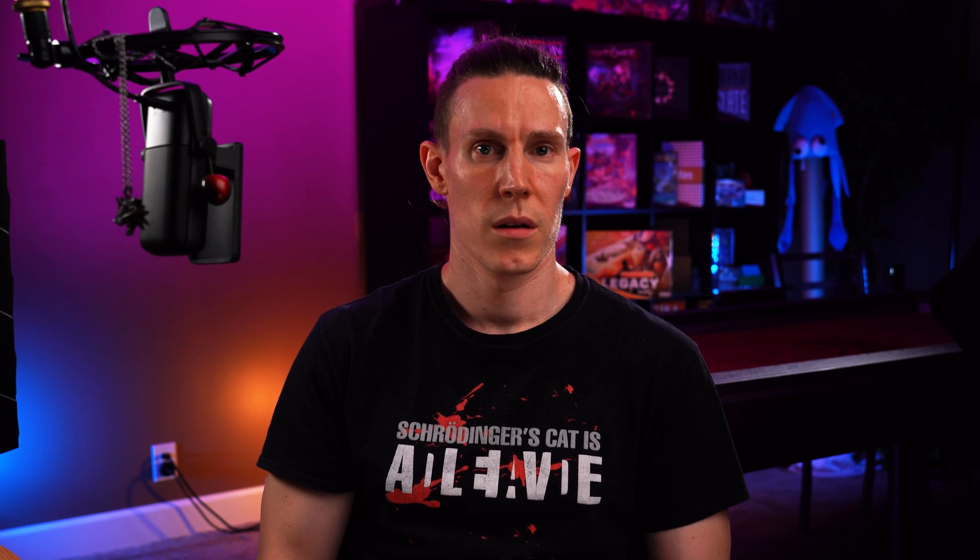Fungible is not quite something I personally used in everyday language until I got into cryptocurrency. Your mileage may vary — maybe you work in banking or at the US Mint — but I assume that is not the case for the majority of you. So let's explore what fungible means. Here are two definitions from Merriam-Webster. First: being something, such as money or a commodity, of such a nature that one part or quantity may be replaced by another equal part or quantity in paying a debt or settling an account. Second: capable of mutual substitution.